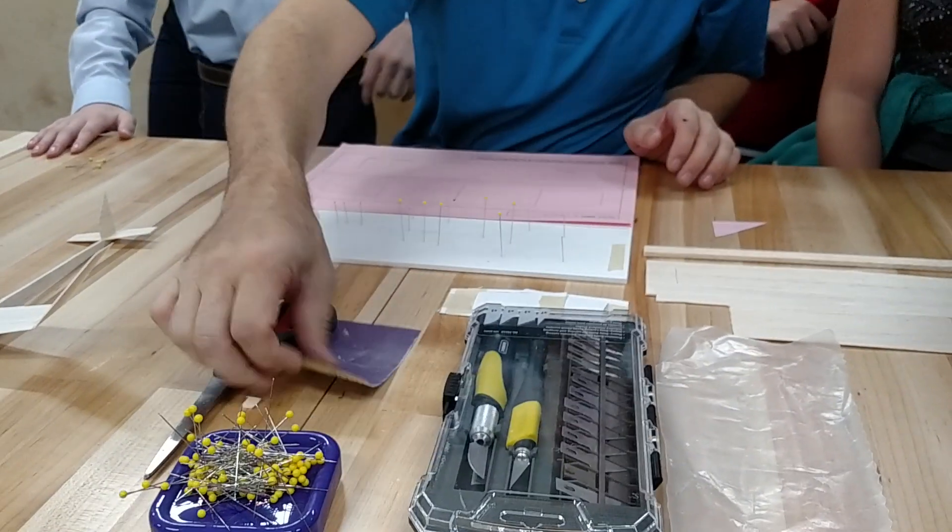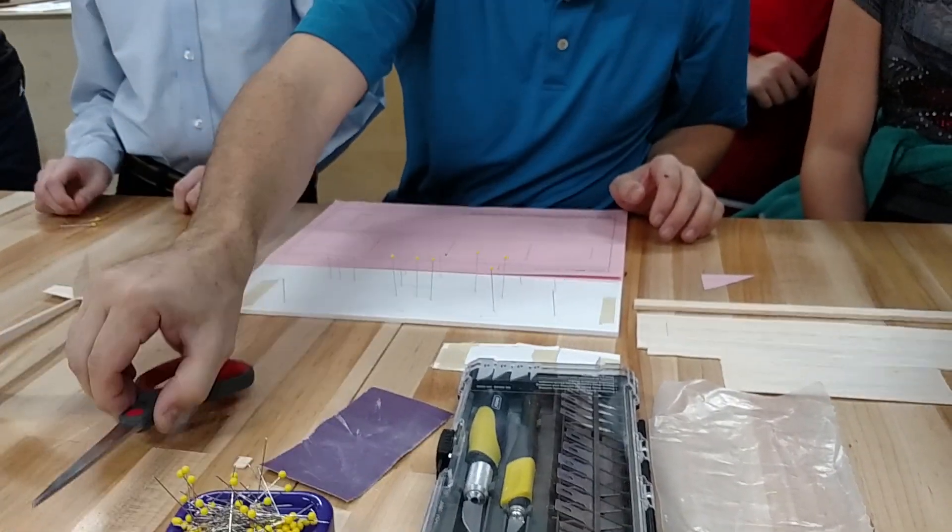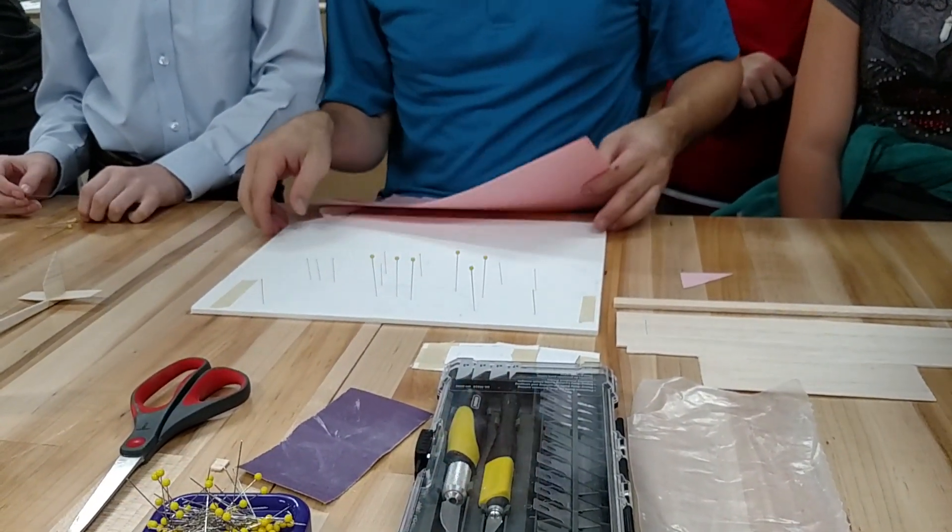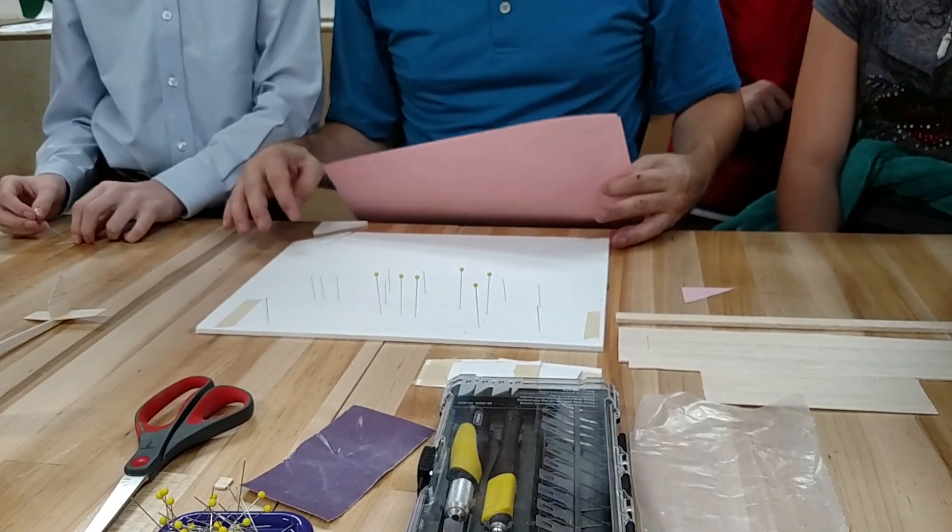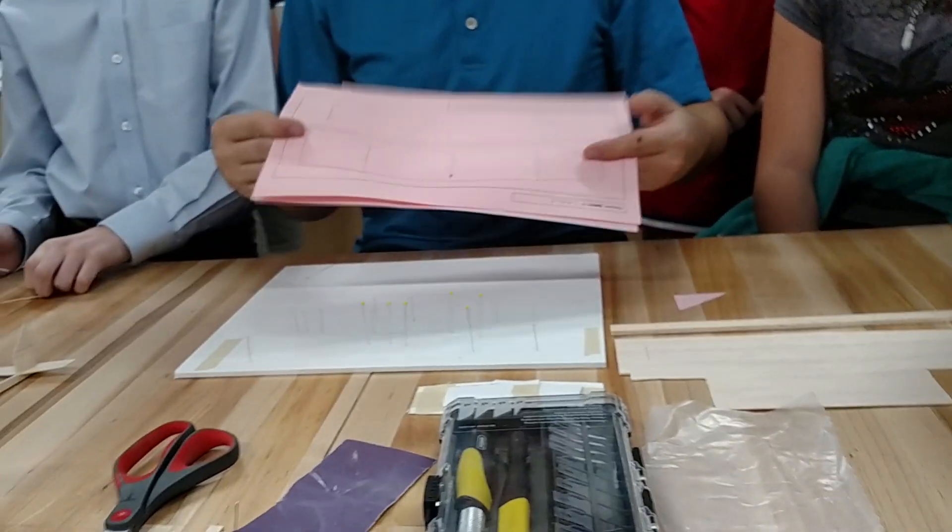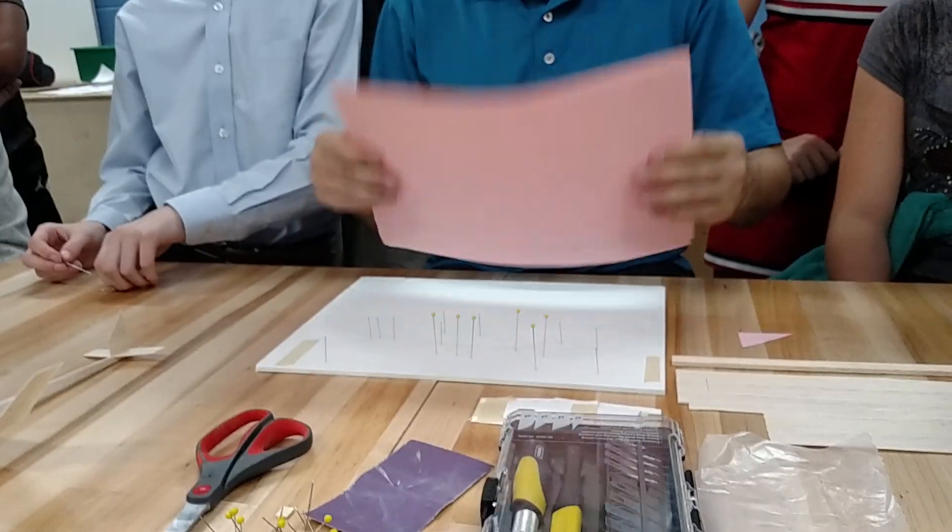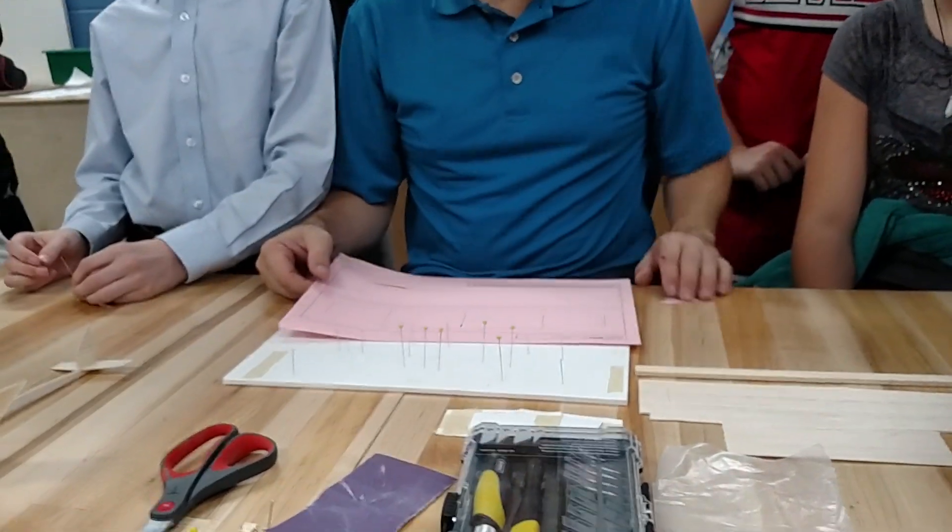an exacto knife, a bunch of pins, some sandpaper and scissors. We need a piece of foam board or cardboard to place all the pieces on, and we'll need the pattern from your design. Okay, so the first thing,